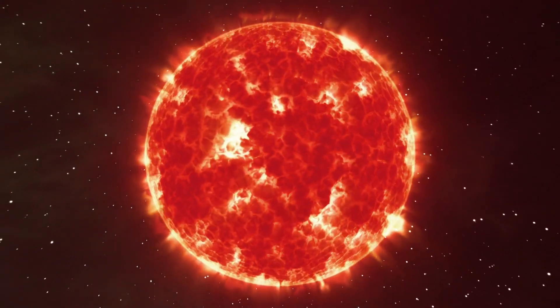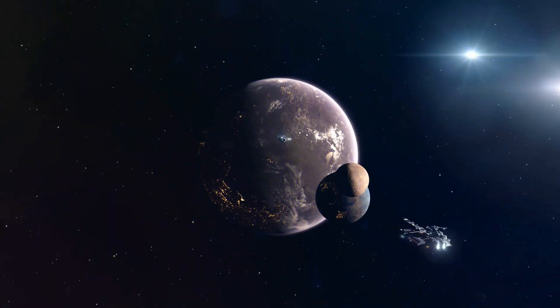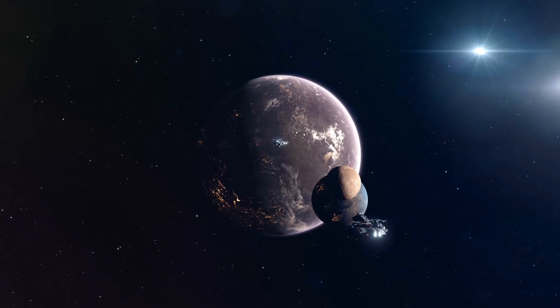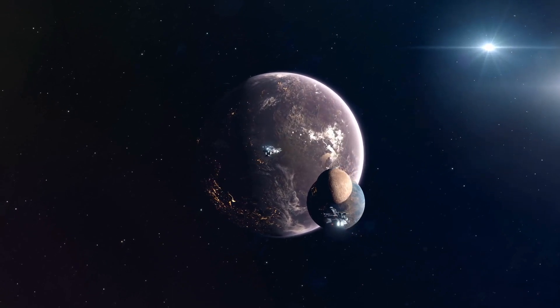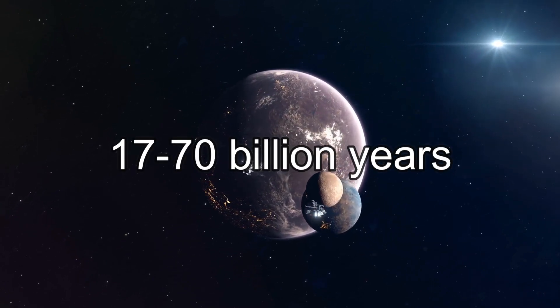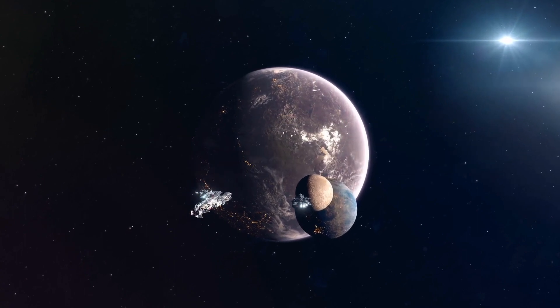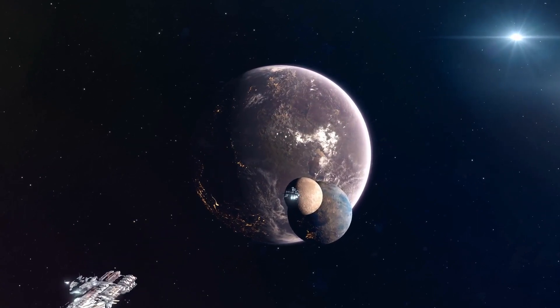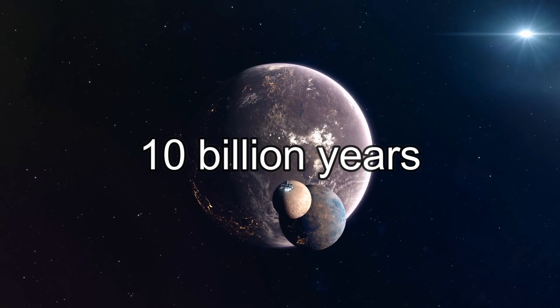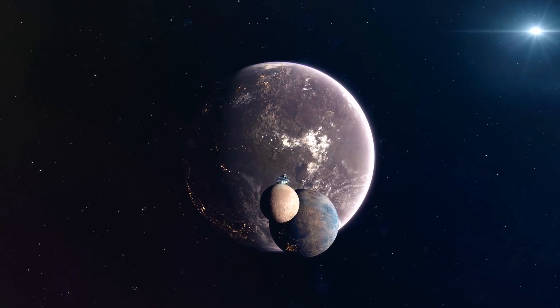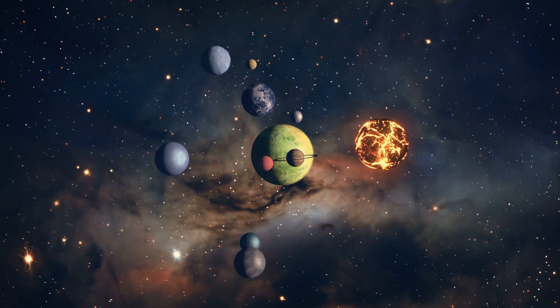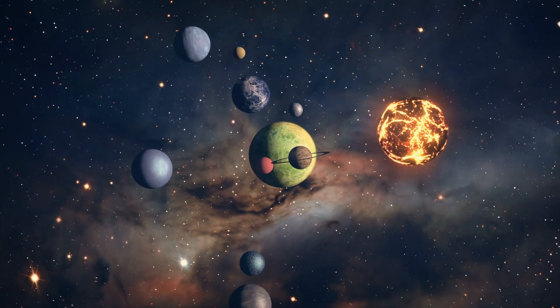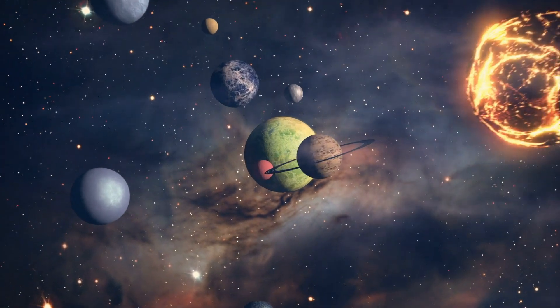I know that planets orbiting around K-stars may not seem suitable for life to exist, but they have a considerable advantage. Their lifetimes range from 17 billion to 70 billion years, whereas our sun was estimated to be alive for about a 10 billion year lifespan. That only means that if life began on a planet orbiting a K-star, it would have had considerably more time to evolve than life on Earth has had thus far.